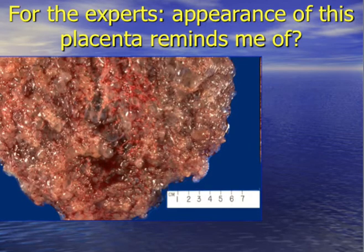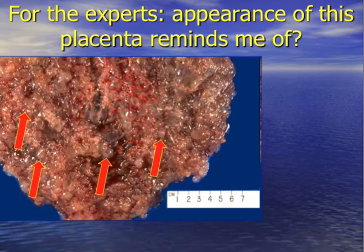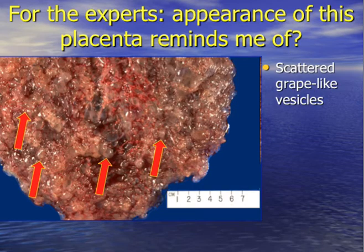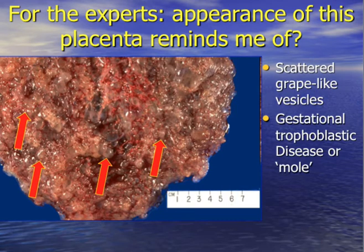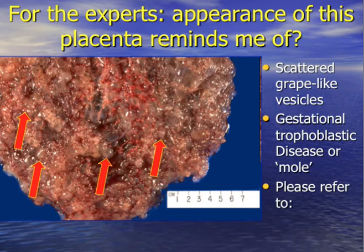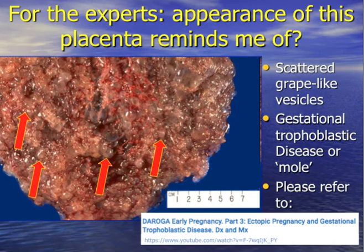Looking closely at the maternal surface of this placenta, you can see a typical appearance of scattered grape-like structures or vesicles. This is linked with gestational trophoblastic disease, molar pregnancy, or mole. For further details, please refer to the Aroga video on early pregnancy part three, which deals with gestational trophoblastic disease.